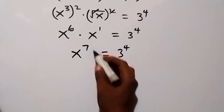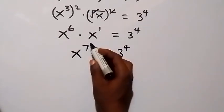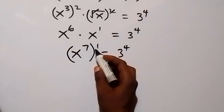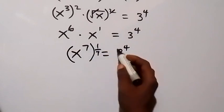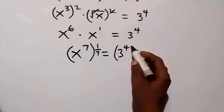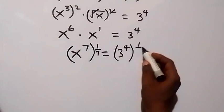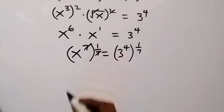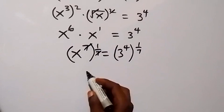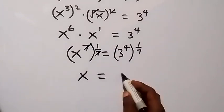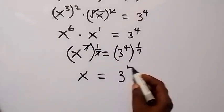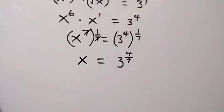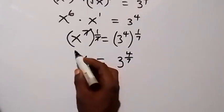This x raised to power one we can add the power, and this becomes x raised to power seven equals 3 raised to power 4. From here, we raise both sides to 1 over 7 in order to remove this 7. This 7 cancels this 7, and we have x equals 3 raised to power 4 over 7.